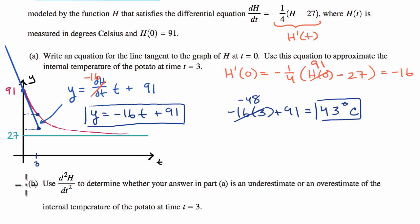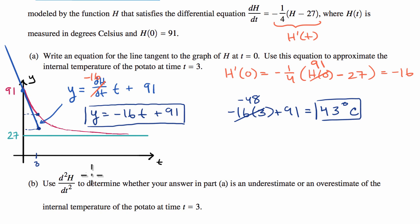We're now going to tackle Part B of the potato problem. It says use the second derivative of H with respect to time to determine whether your answer in Part A is an underestimate or an overestimate of the internal temperature of the potato at time T equals three. In Part A, we found the equation of the tangent line at time equals zero and used that to estimate the internal temperature at T equals three. So how is the second derivative going to help us think about whether that was an overestimate or an underestimate?